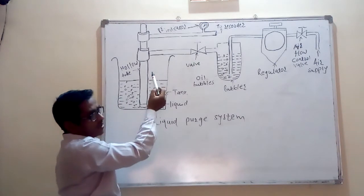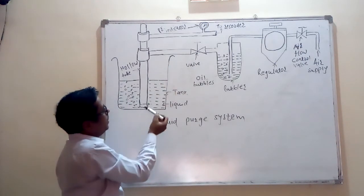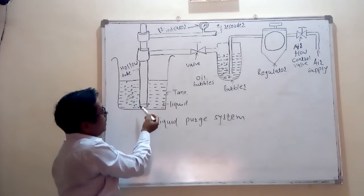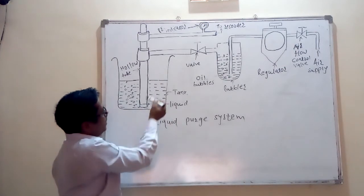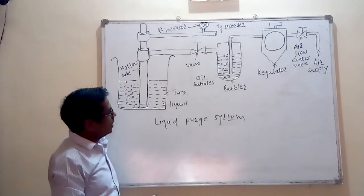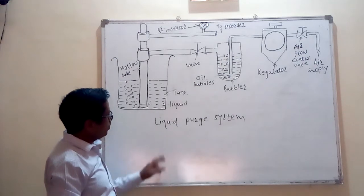The readings or scale of the pressure gauge is calibrated in terms of level of the measuring tank. So, more the pressure gauge reading, more is the level of the liquid in the tank. That's all about liquid purge system.